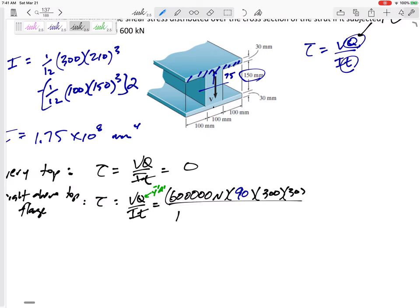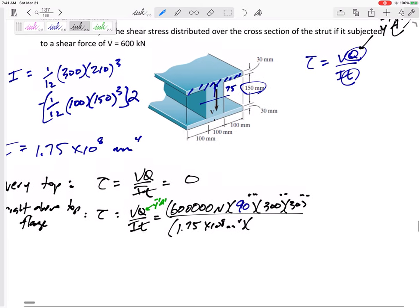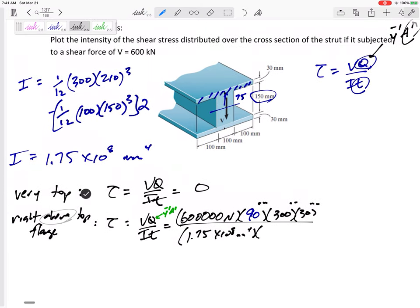Alright, then the I 1.75 times 10 to the 8 millimeters to the fourth, all this is millimeters. And then the thickness, alright, so above right here the thickness would be 300. So this would be 9.24 megapascals, 9.24 MPa.